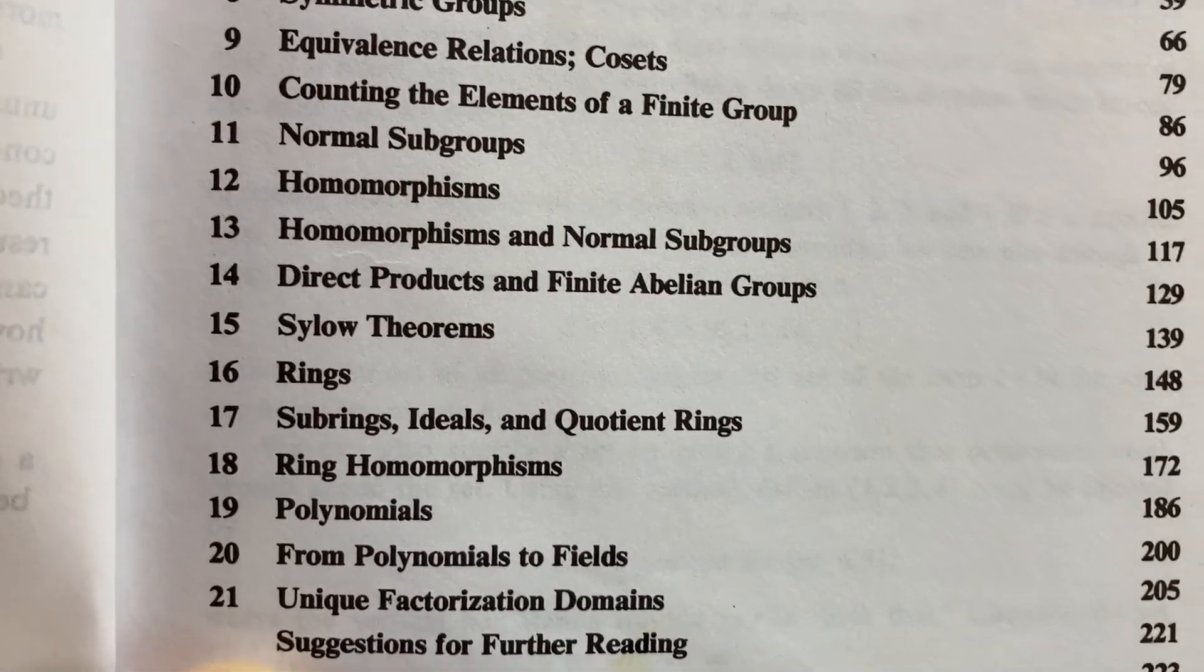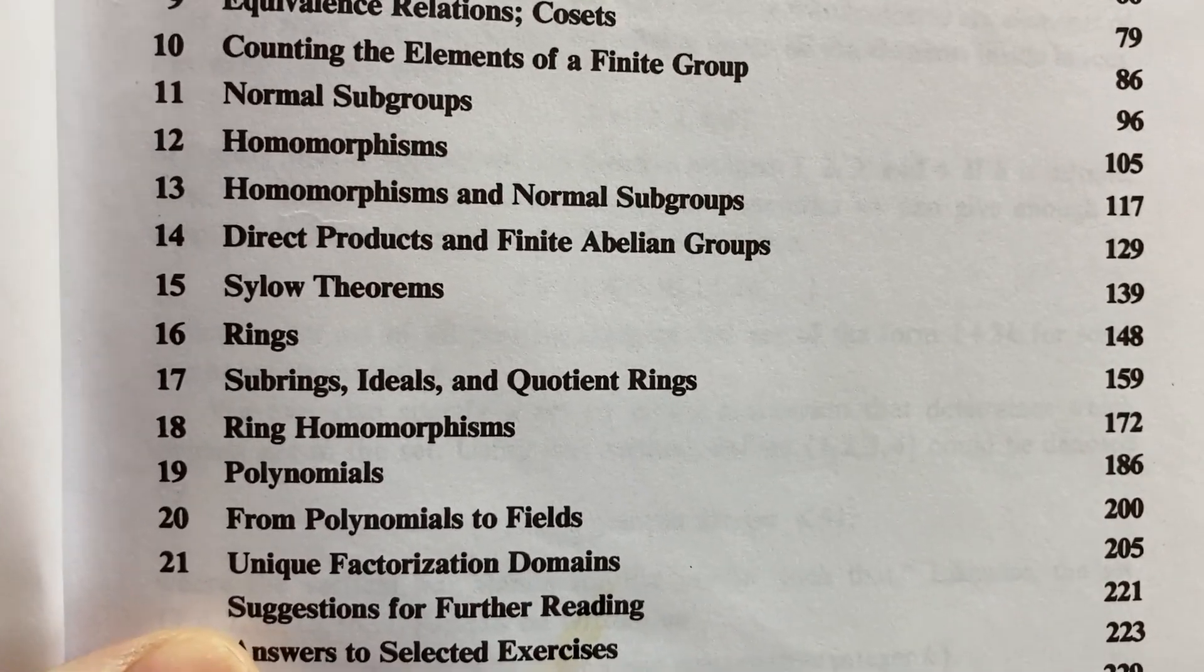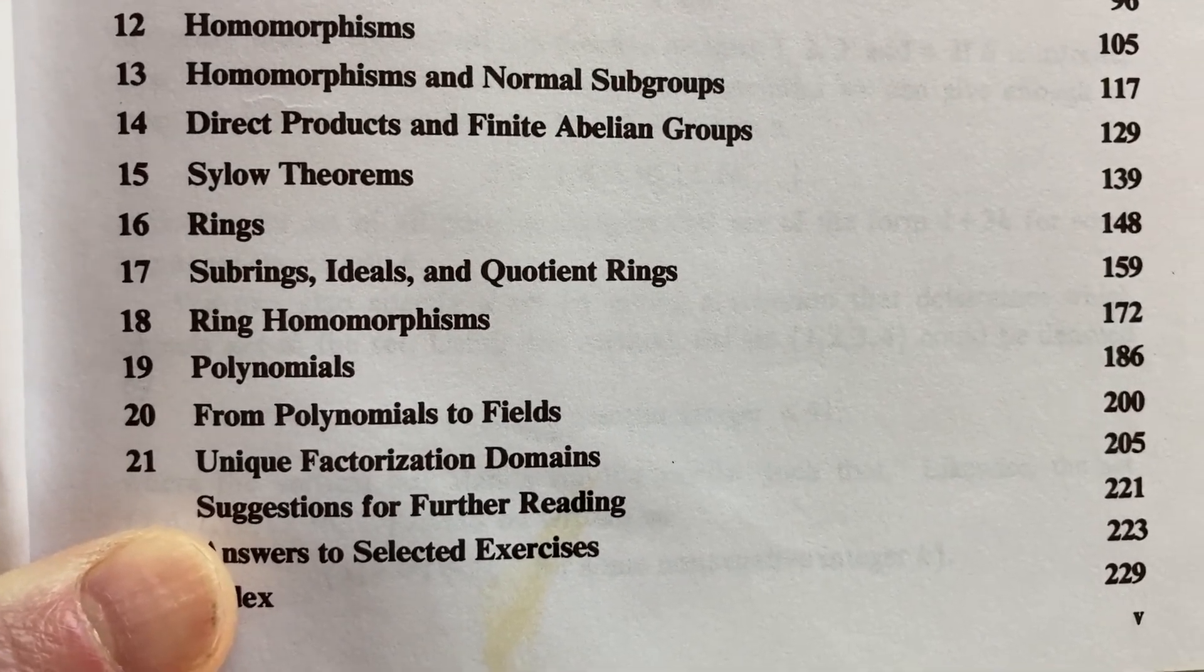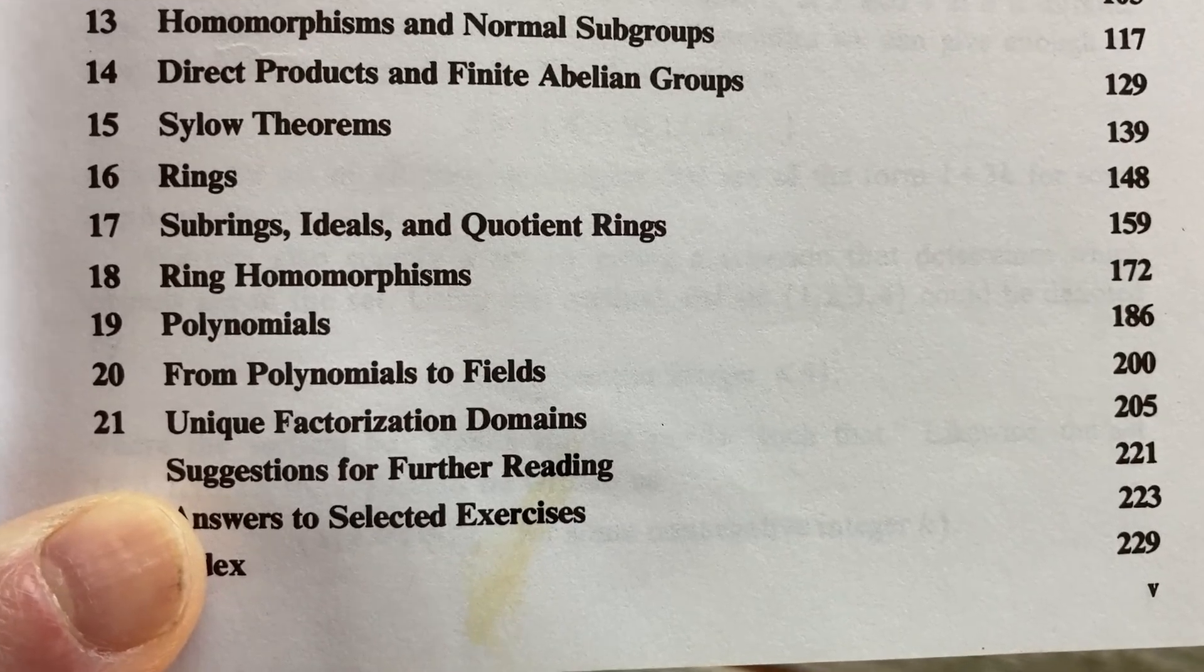Then counting the elements of a finite group, normal subgroups, homomorphisms, homomorphisms and normal subgroups, direct products and finite abelian groups, Sylow theorems, rings, subrings, ideals, and quotient rings.